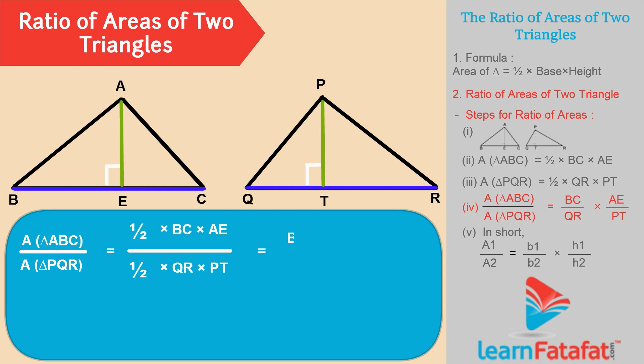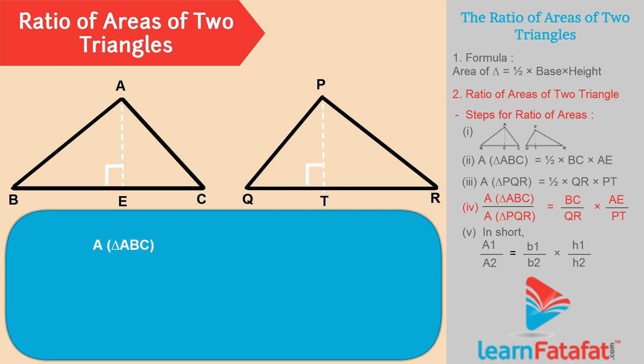That gives BC into AE divided by QR into PT. Or more simply, area of triangle ABC divided by area of triangle PQR is equal to BC divided by QR into AE divided by PT.